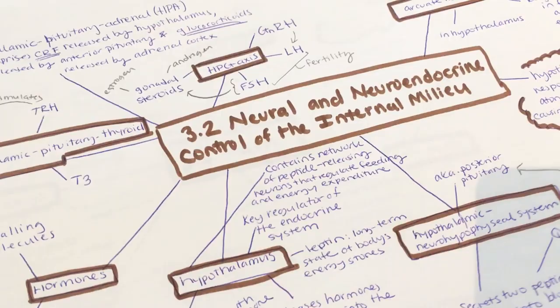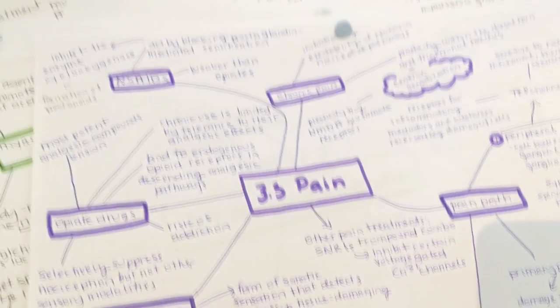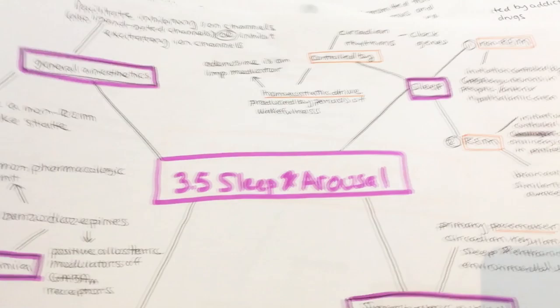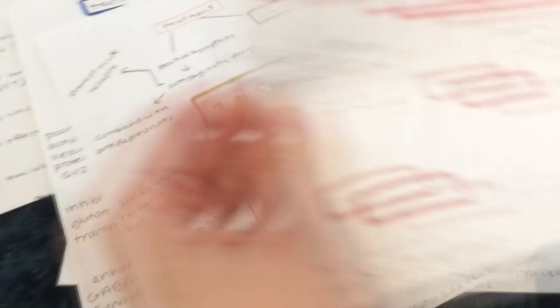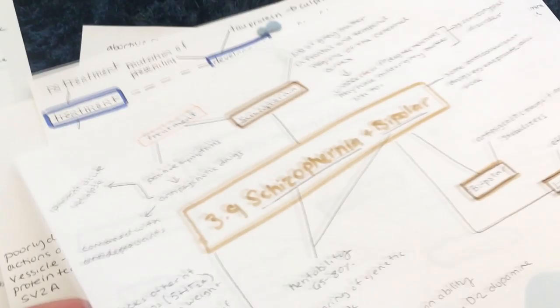Topics also included neural and neuroendocrine control of the internal milieu, pain pathways, neuroinflammation, sleep and arousal, higher cognitive function and behavioral control, mood and emotion, reinforcement and addictive disorders, schizophrenia and bipolar disorder, neurodegeneration, seizure disorders and stroke, and migraine. Those are the general topics I've been studying, and I've been using this method for most of my exams since we have book-based exams in my program.